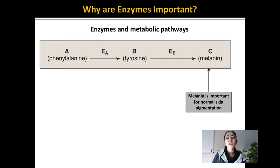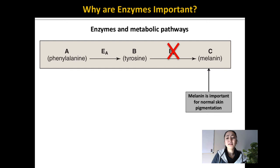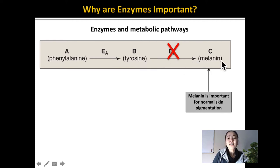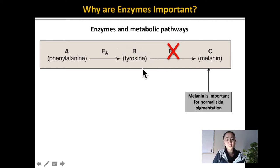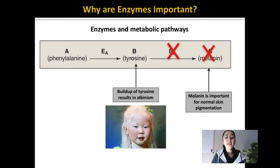However, there are some individuals that cannot produce enzyme B, which is necessary for turning tyrosine into melanin. Since they can't produce this enzyme, they don't make melanin and tyrosine accumulates in their body — it can't be changed or converted to something else. That results in a form of albinism, which is actually caused by a buildup of tyrosine in the body.